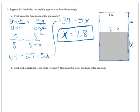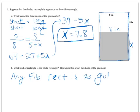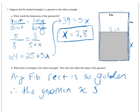And what kind of rectangle is the white rectangle? It's a Fibonacci rectangle because its lengths are 5 and 8, two consecutive Fibonacci numbers. Which means that it is almost a golden rectangle. Any Fibonacci rectangle is almost golden, approximately golden. Which means that its gnomon, therefore the gnomon is approximately or almost square. Because only golden rectangles can have square gnomons.